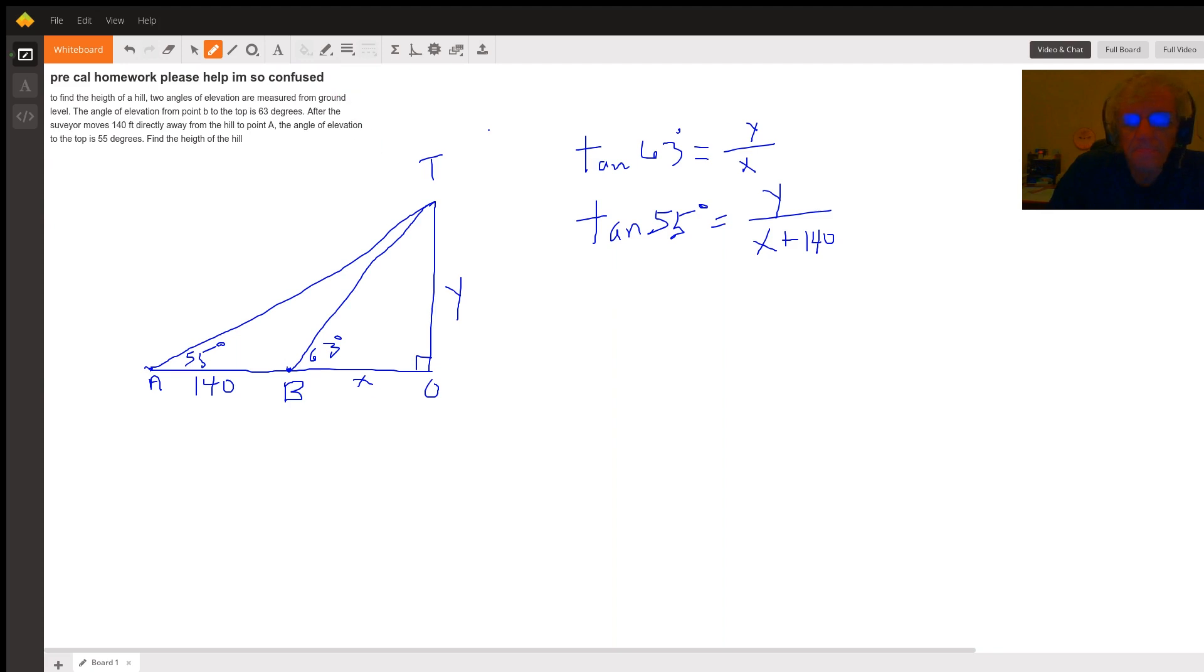So if we isolate y for the first equation, we get y equals x times the tangent of 63. And now I can take this value—oh, let me go to black—and substitute it for y in the other equation. So our new equation with one variable is tangent of 55 equals x tangent of 63 divided by x plus 140.